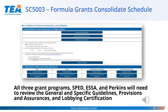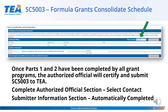All three grant programs — SPED, ESSA, and Perkins — will need to review the General Guidelines, Provisions, and Assurances; Lobby and Certification; and Program Specific Guidelines and Provisions and Assurances. Once all program staff have completed the reviewed parts 1 and 2, the authorized official will need to certify and submit the SC5003. Complete the information in the authorized official section by selecting the appropriate person under select contact. The submitter information will be completed by the system once the certify and submit button is selected.